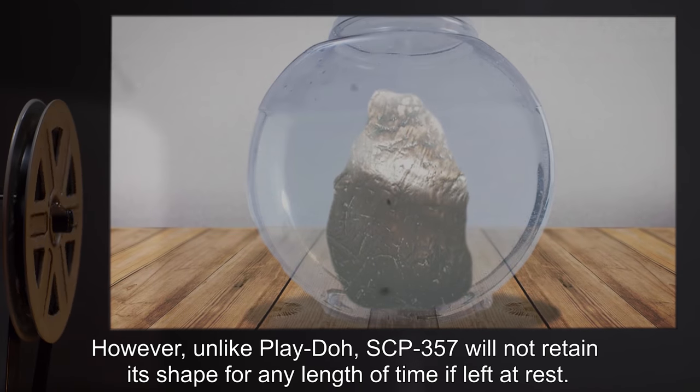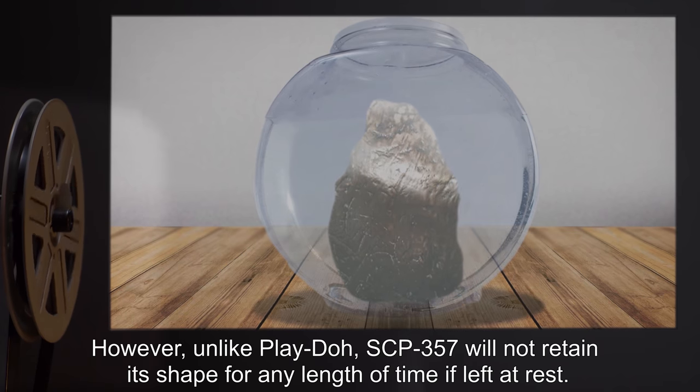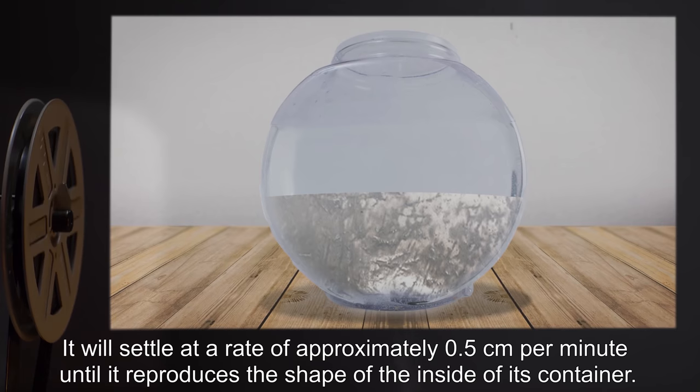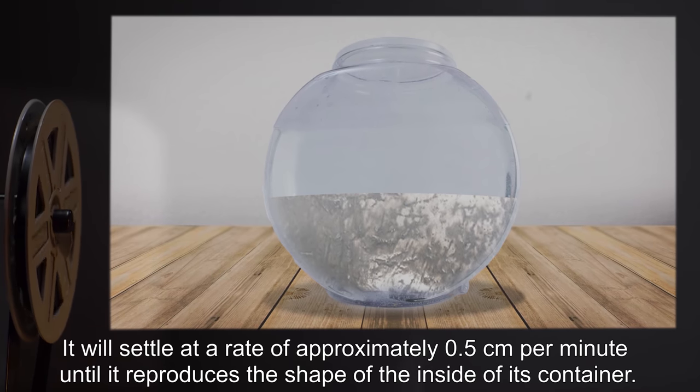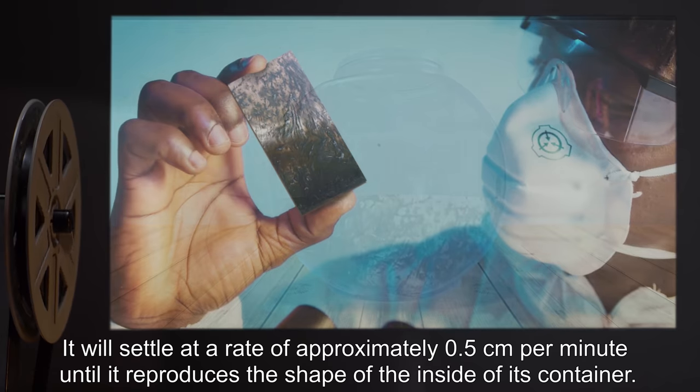However, unlike Play-Doh, SCP-357 will not retain its shape for any length of time if left at rest. It will settle at a rate of approximately 0.5 centimeters per minute until it reproduces the shape of the inside of its container.